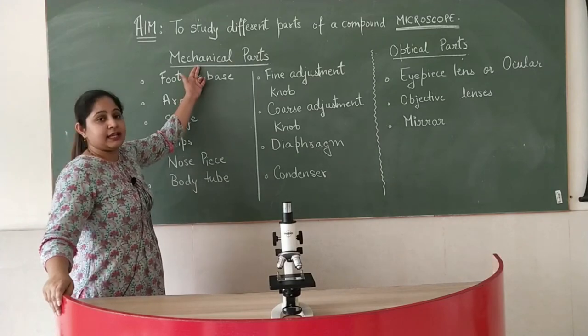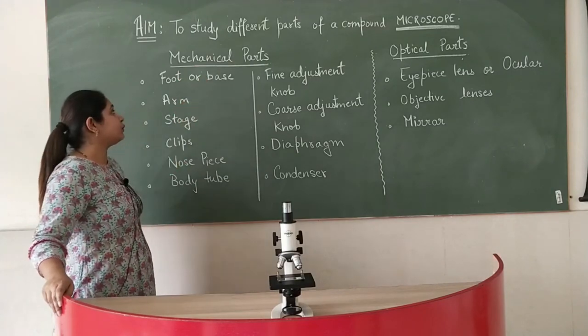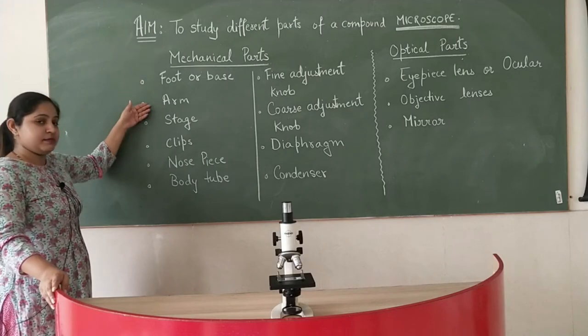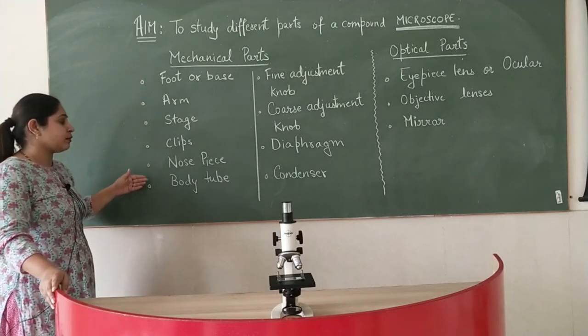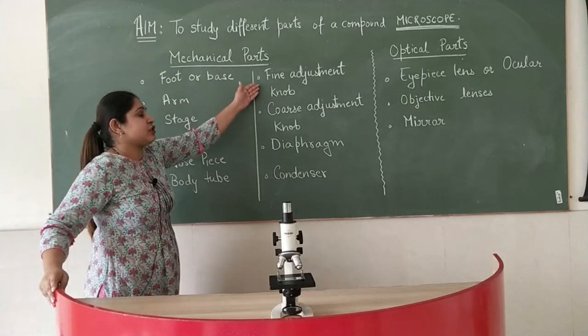One is the mechanical parts which includes foot or base, arm, stage, clips, nose piece, body tube, adjustment knobs, diaphragm and condenser.